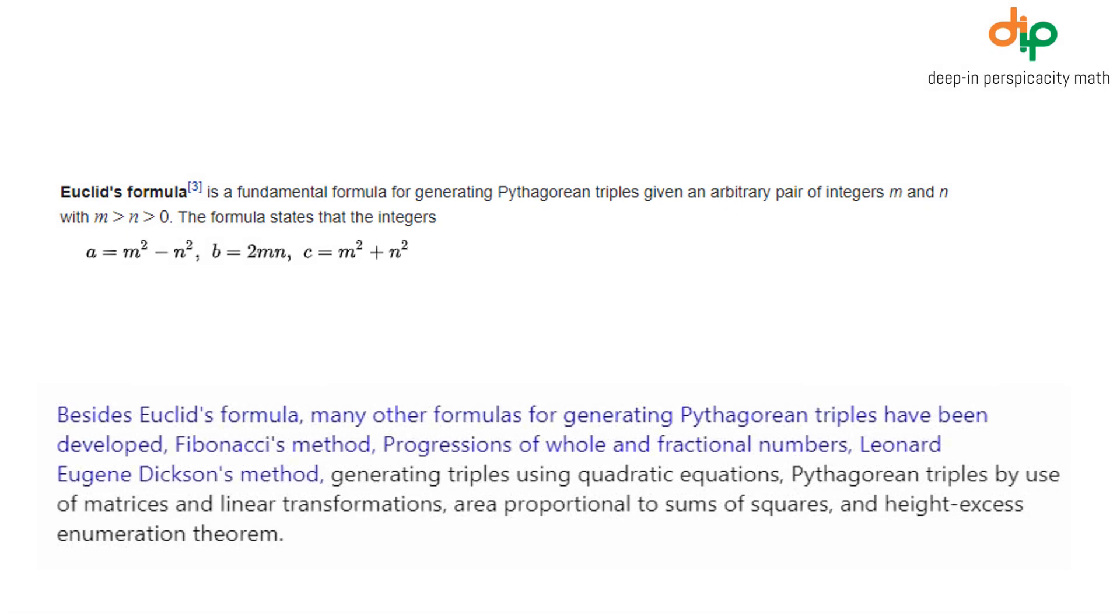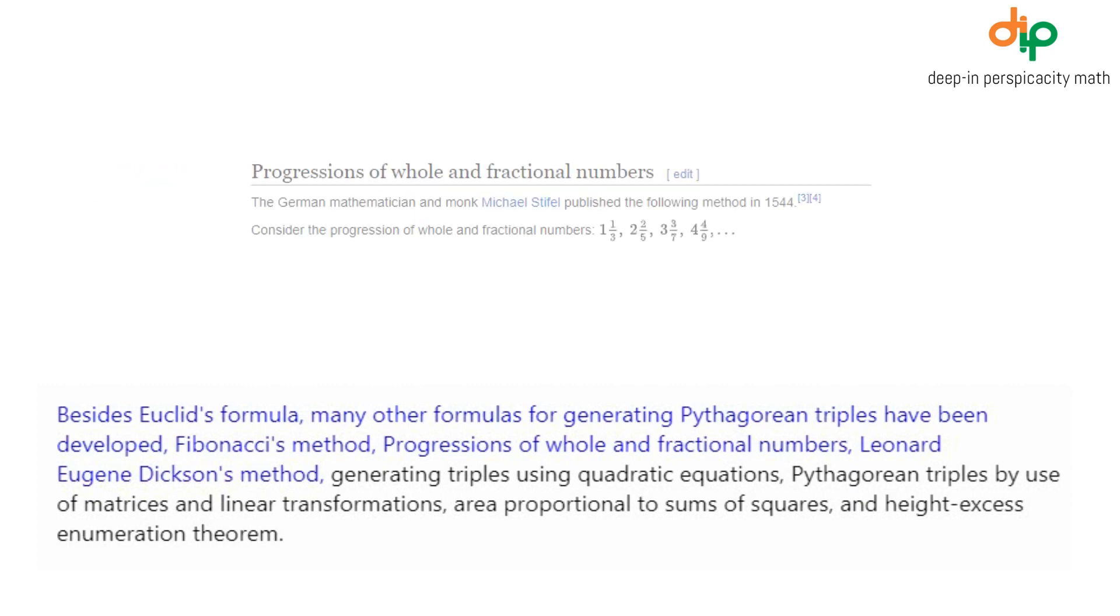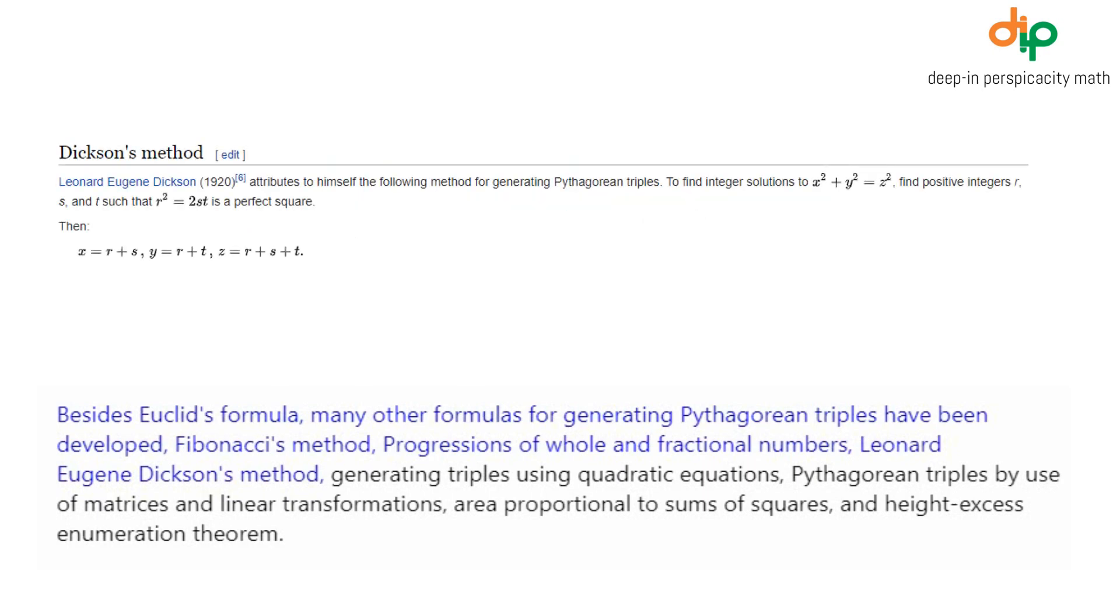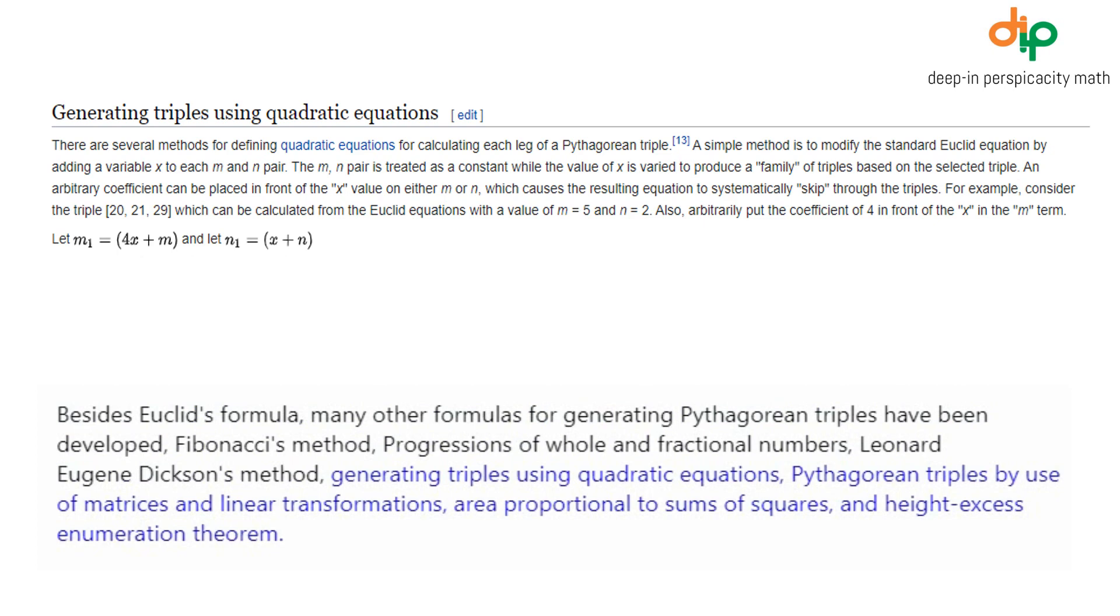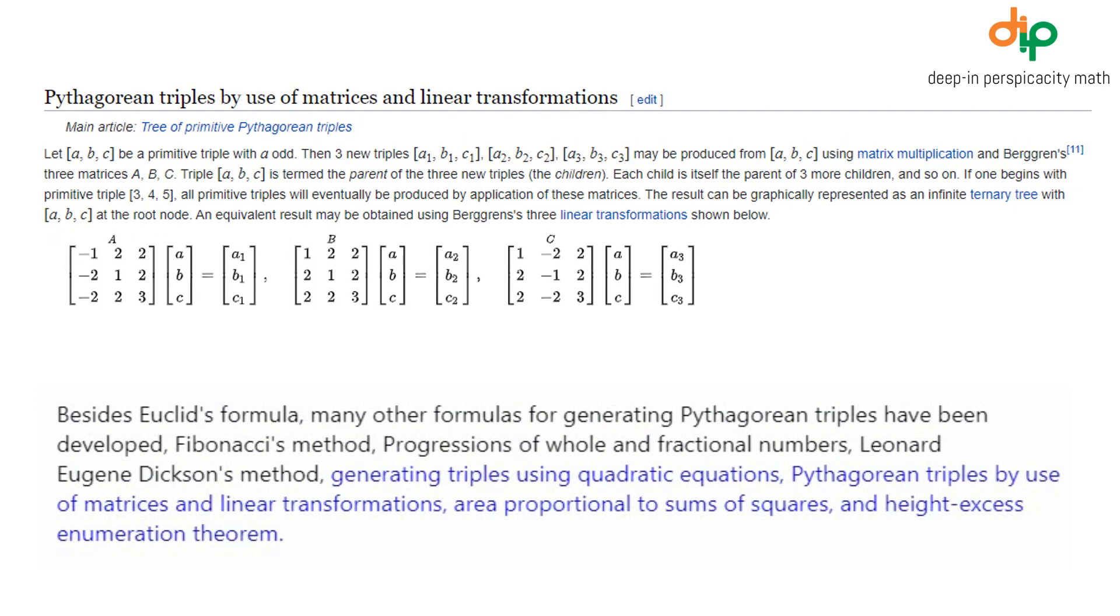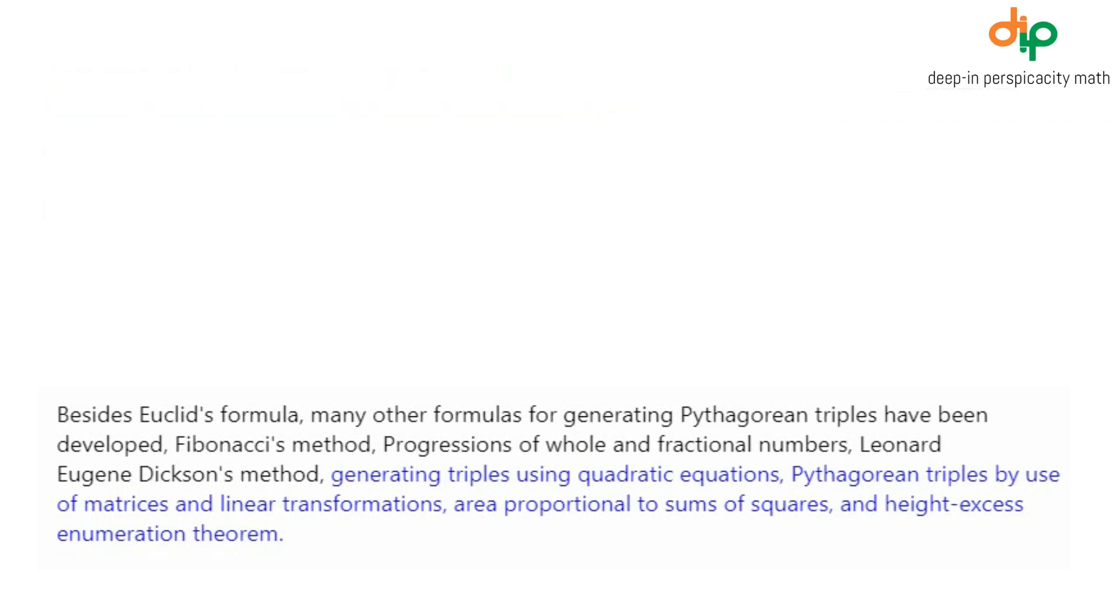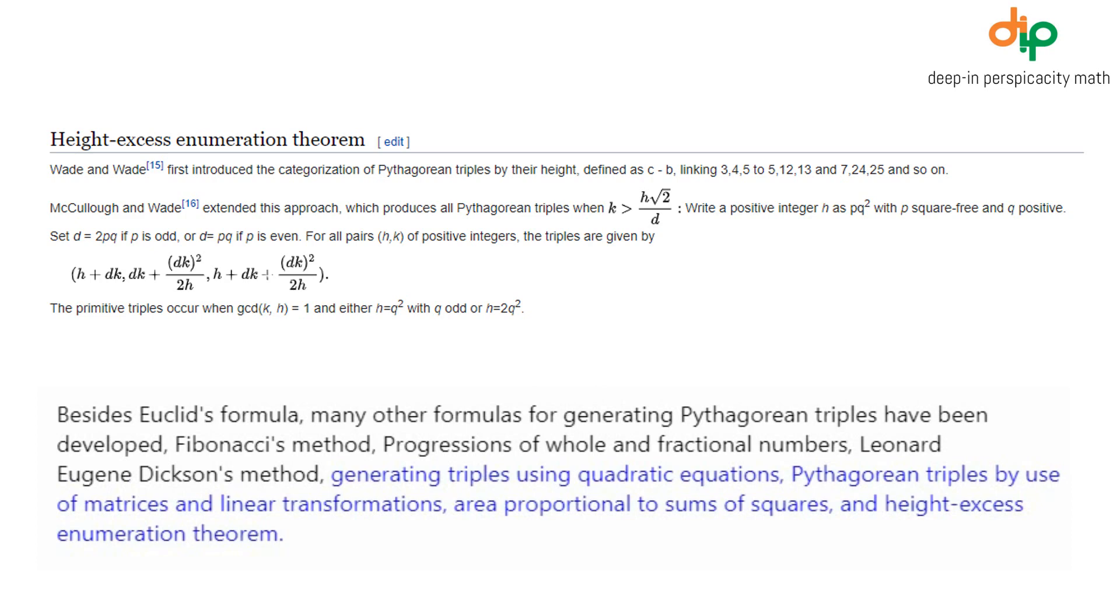Besides Euclid's formula, many other formulas for generating Pythagorean triples have been developed: Fibonacci's method, progressions of whole and fractional numbers, Lennart-Eugène Dixon's method, generating triples using quadratic equations, Pythagorean triples by use of matrices and linear transformations, area proportional to sums of squares, and height-excess enumeration theorem.